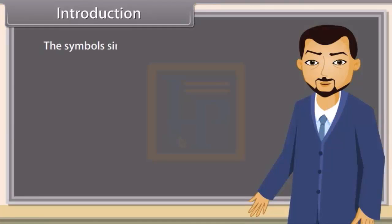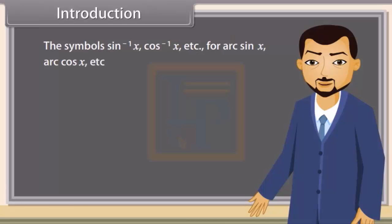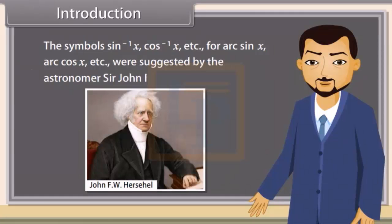The symbols sin⁻¹x, cos⁻¹x, etc., also written as arc sin x, arc cos x, etc., were suggested by the astronomer Sir John F. W. Herschel in 1813. Now let's learn about inverse trigonometric functions.